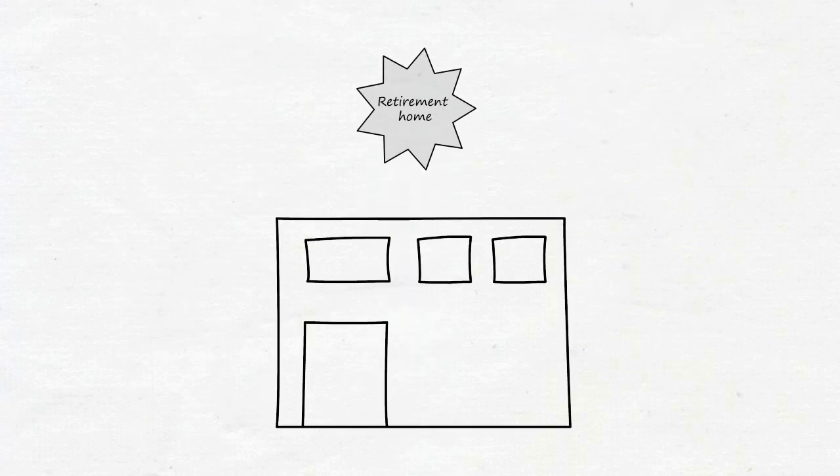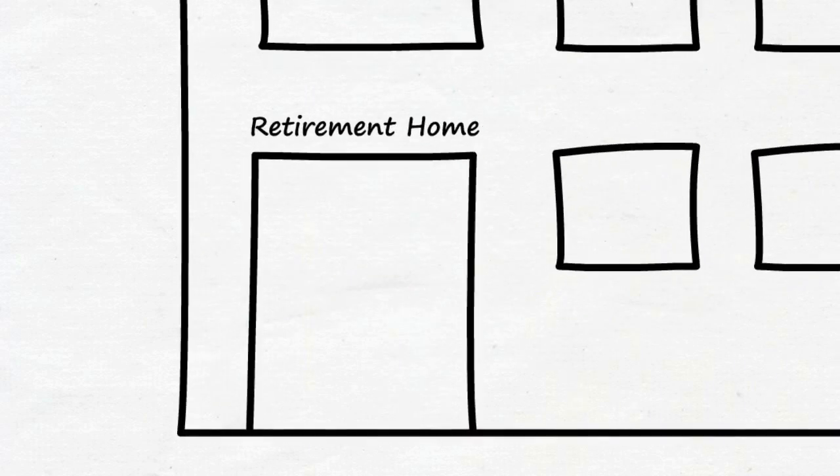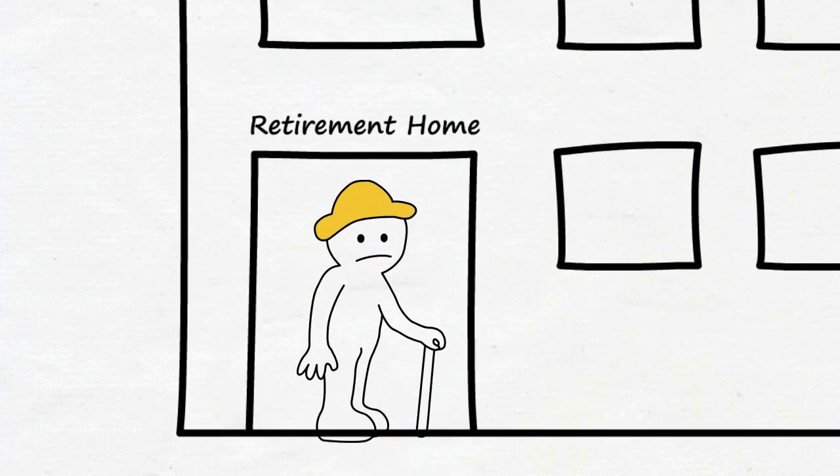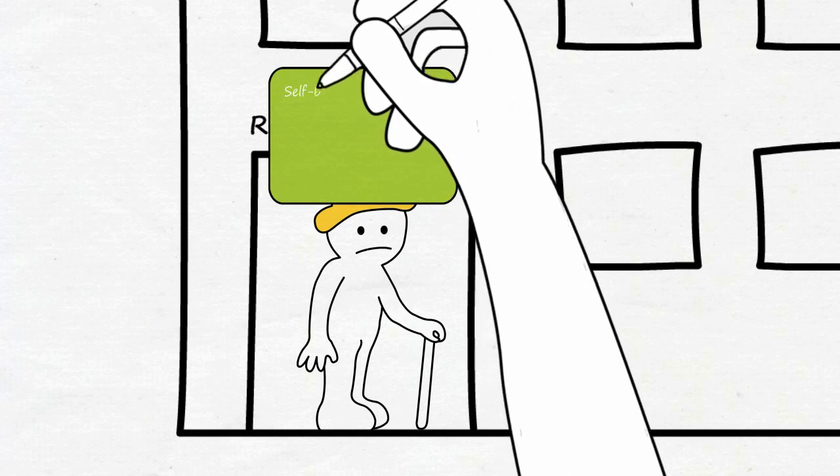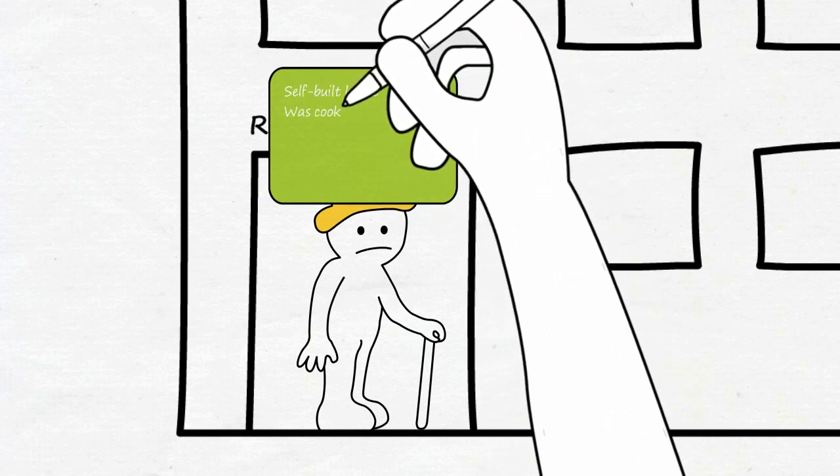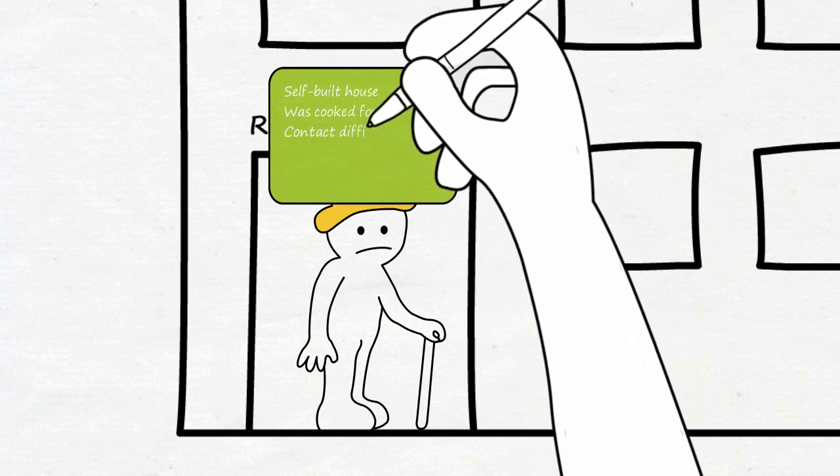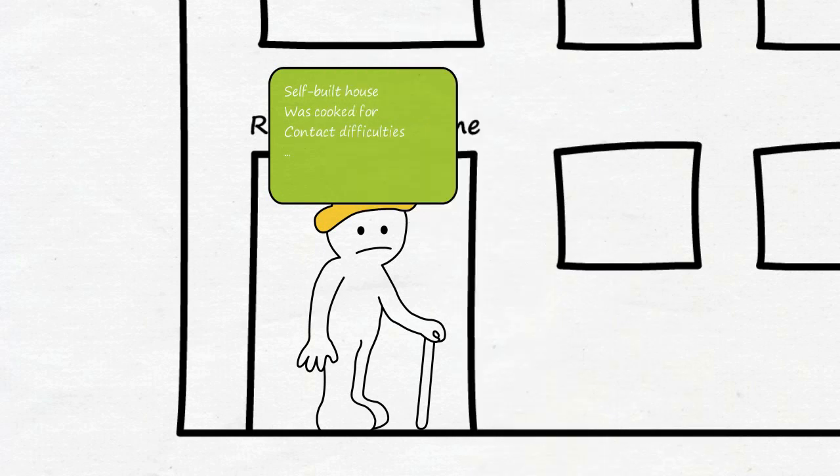Or take the example of the elderly man who has gone into a retirement home because of his wife's passing. Let's say he lived for 60 years in the same house that he personally built. His wife had cooked for him, and he has always had difficulty connecting with other people. Having to move to a retirement home can therefore easily be perceived as a loss of his safe environment, or as an existential fear.